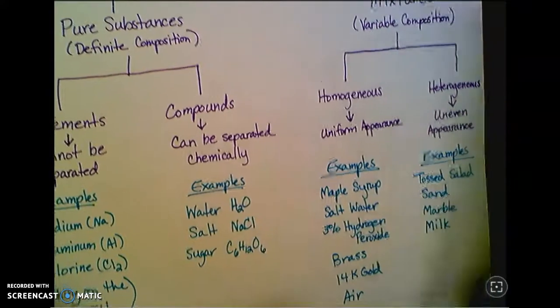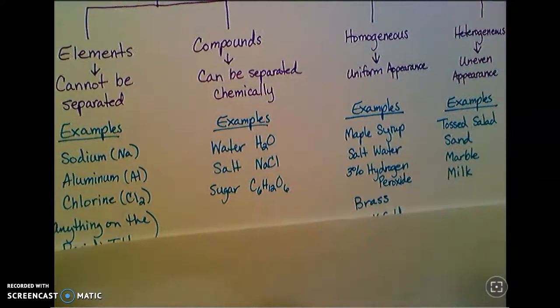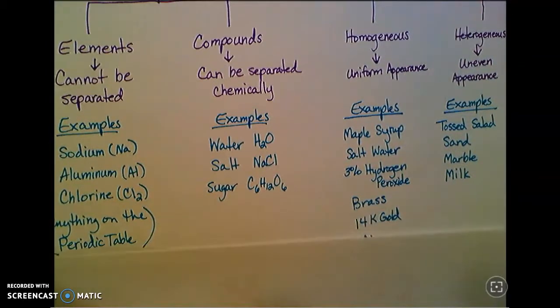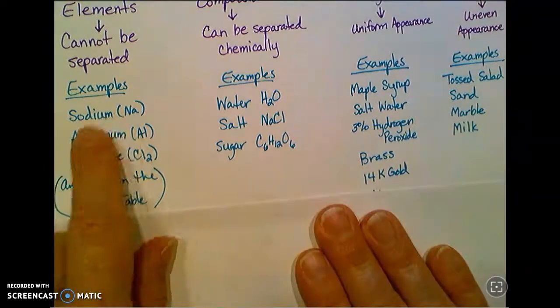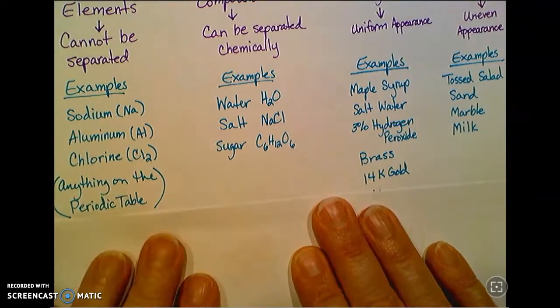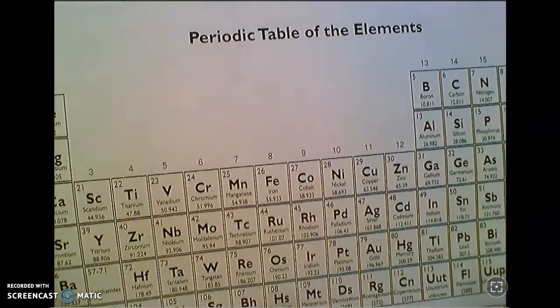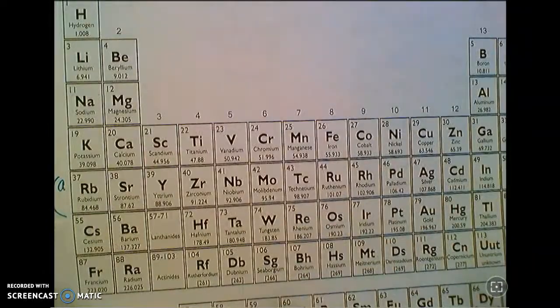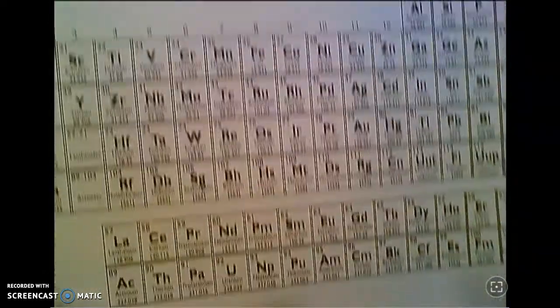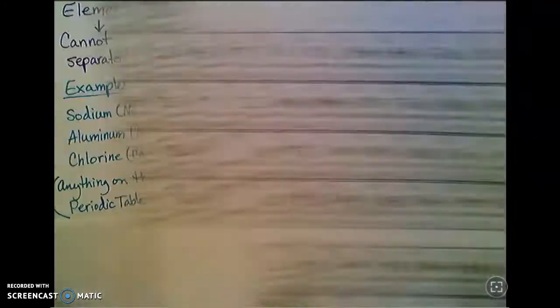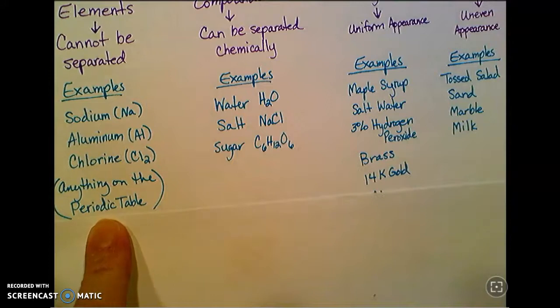Let's look at some examples. Examples of elements: sodium, aluminum, chlorine. Basically anything that you can find on this periodic table of the elements, which we'll get a whole lot more familiar with coming up. This is just your complete list of all of the elements that there are. There's nothing that's an element that's not on that table.